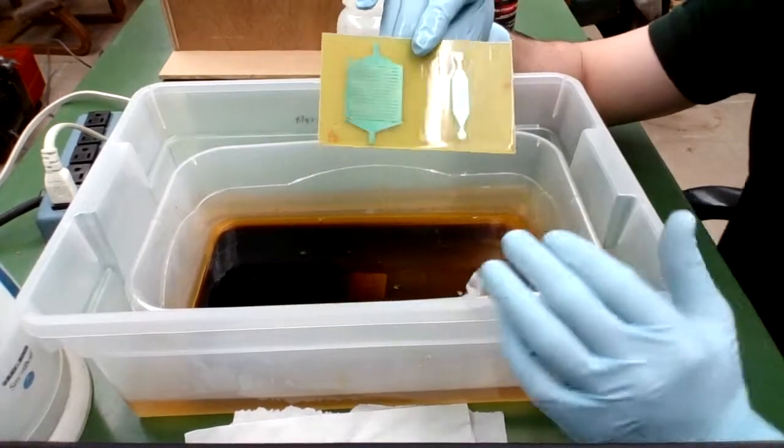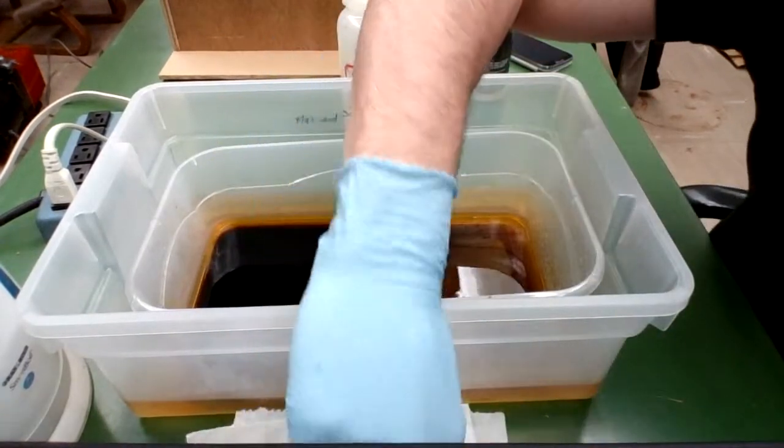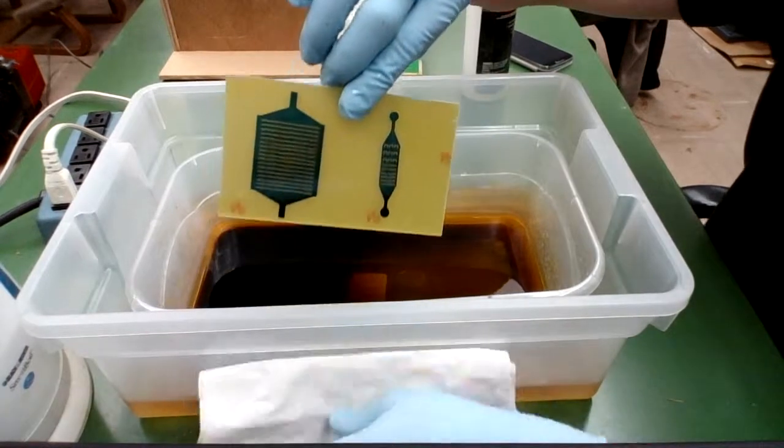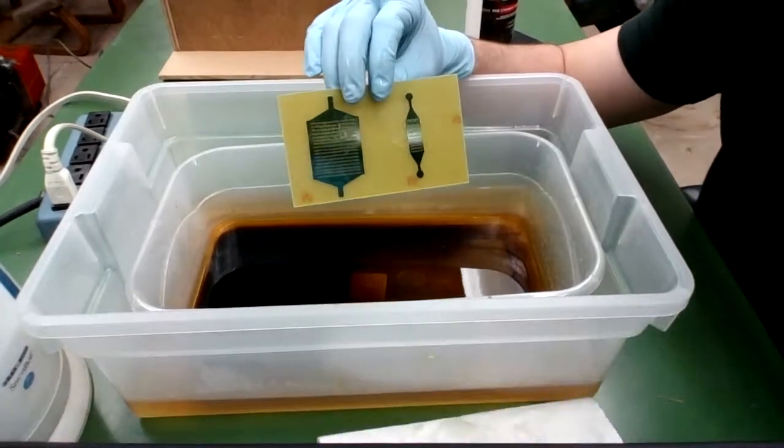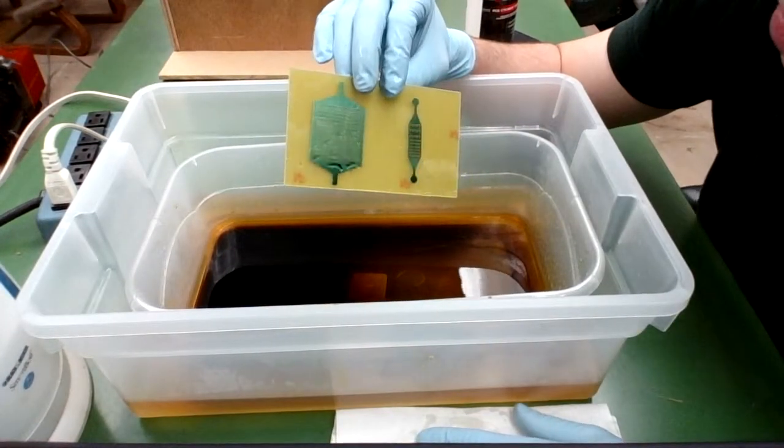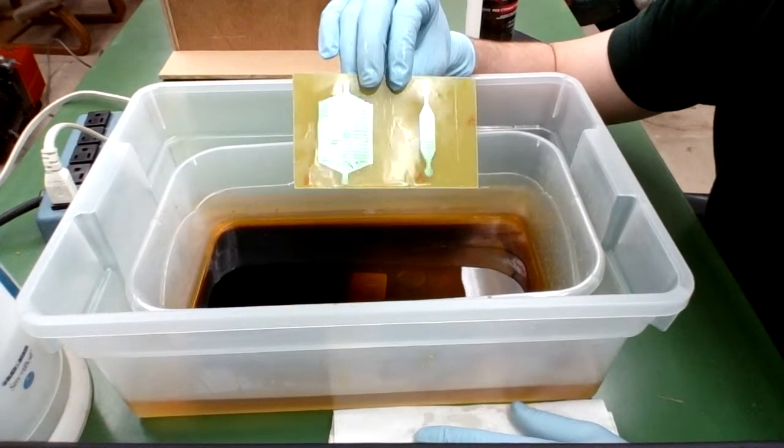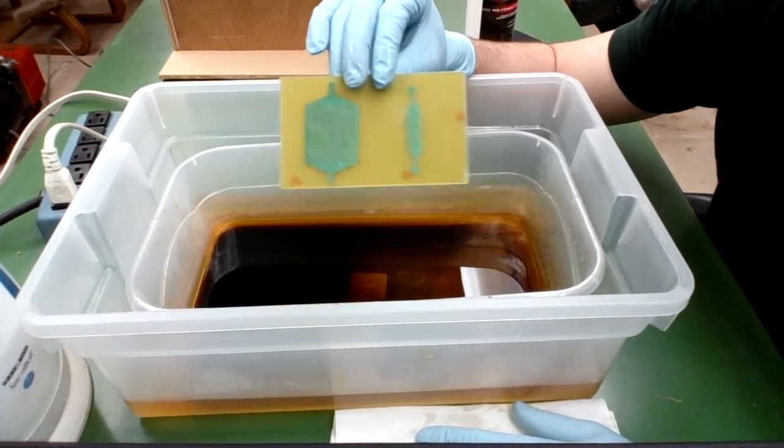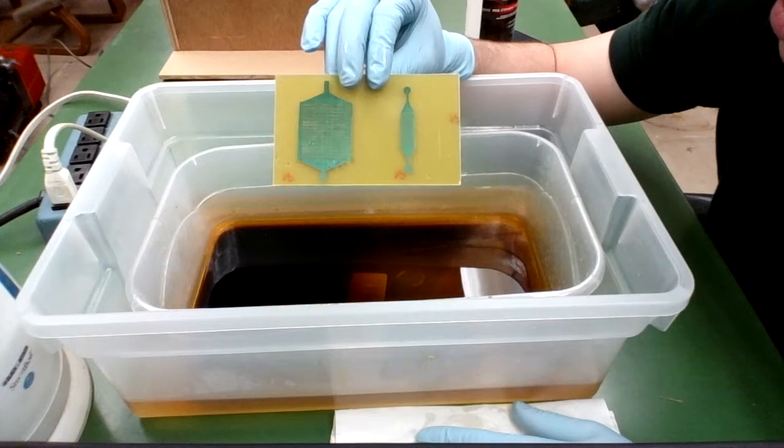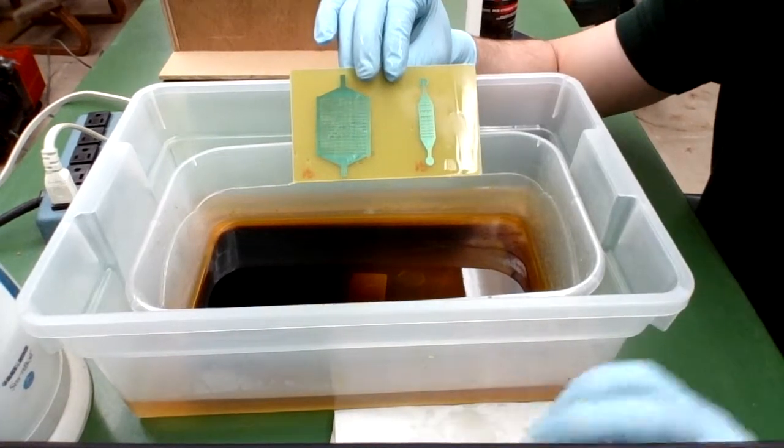All right, so here is our completely etched circuit board. Take a paper towel, dry it off slightly. And because the surface of the photoresist is relatively bumpy, I like to remove the photoresist layer leaving the copper behind like this.